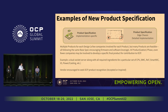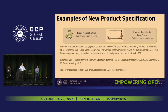We're definitely encouraging folks to seek product recognition — OCP accepted, OCP inspired. There are some caveats: the OCP product recognition program — OCP inspired product recognition is reserved for our silver, gold, and platinum level members. All members can receive OCP accepted recognition. Again, if you have any questions about that process, please come see me or anyone on the OCP staff — happy to walk you through that.